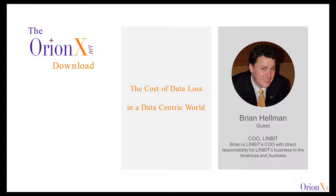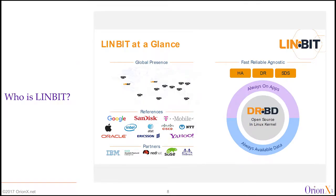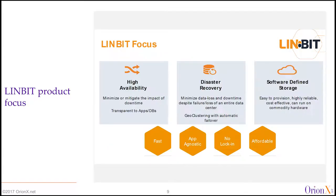Linbit was originally founded in 2001. We started out developing DRBD, which is a block-level replication software for Linux. The module itself is in the Linux kernel — it replicates data in real time between multiple points. As the software has progressed, it's now capable of mirroring data locally and remotely simultaneously. Because it's part of the Linux kernel, applications can use it without really having to do anything because it's already there.